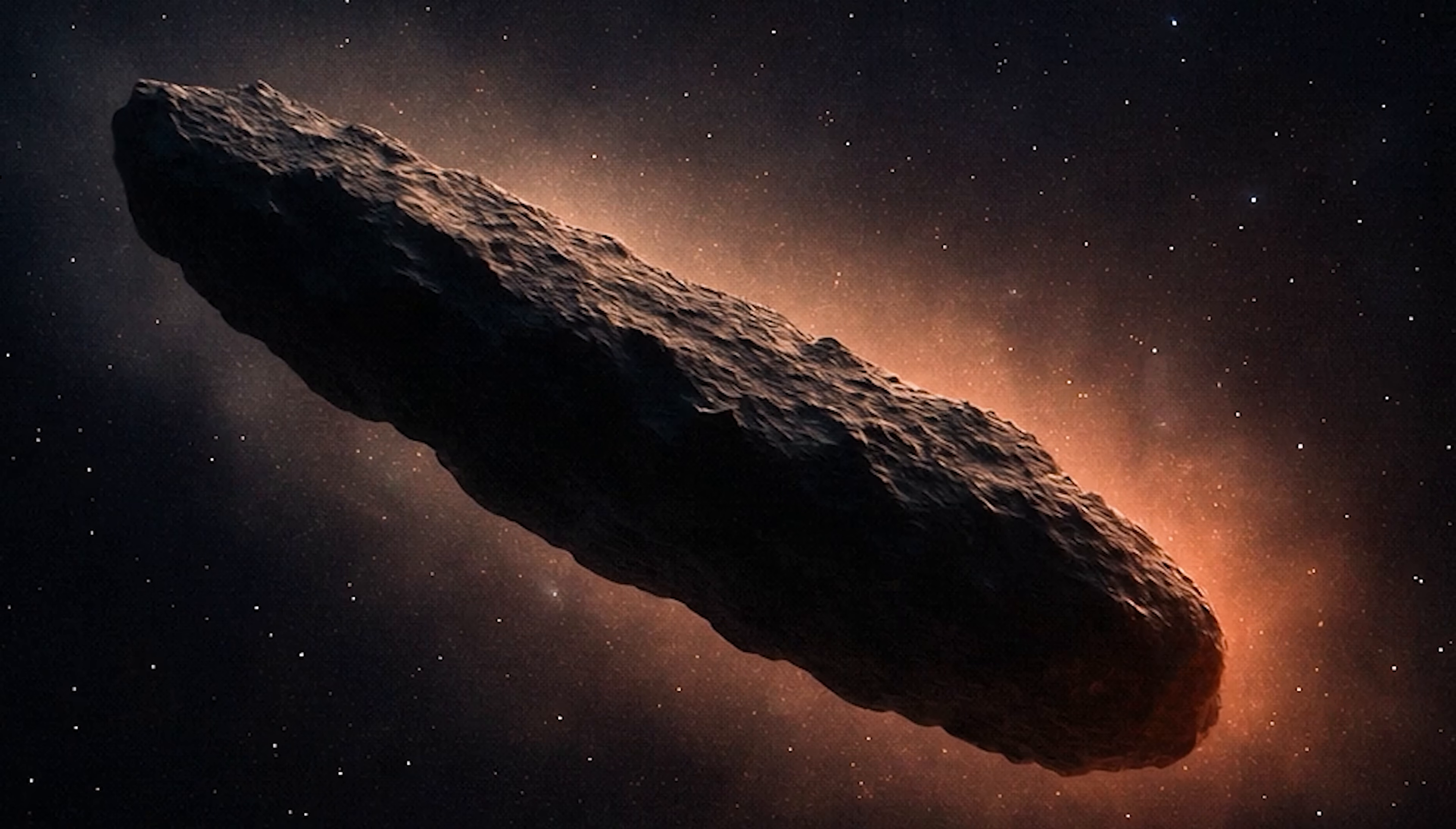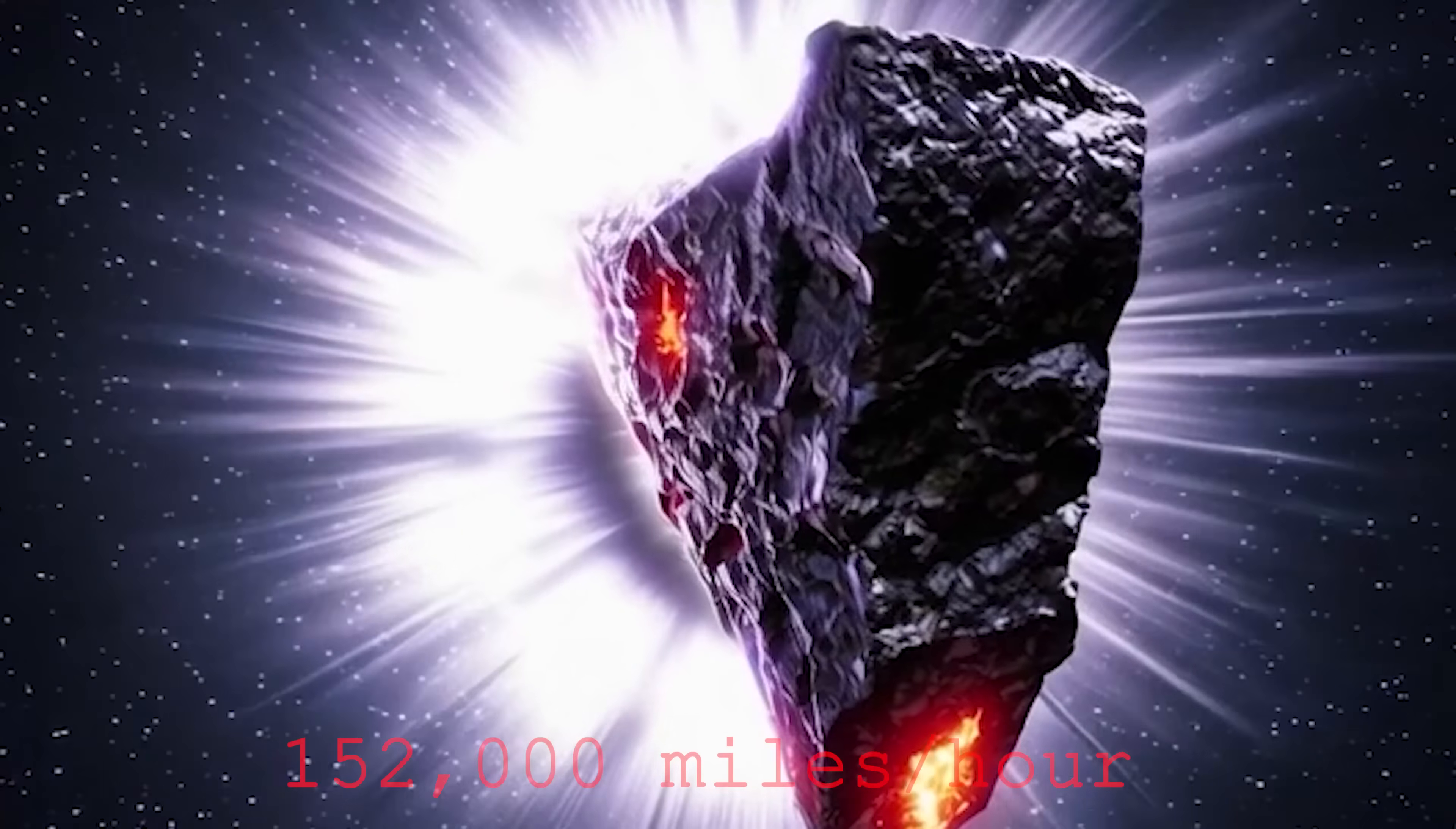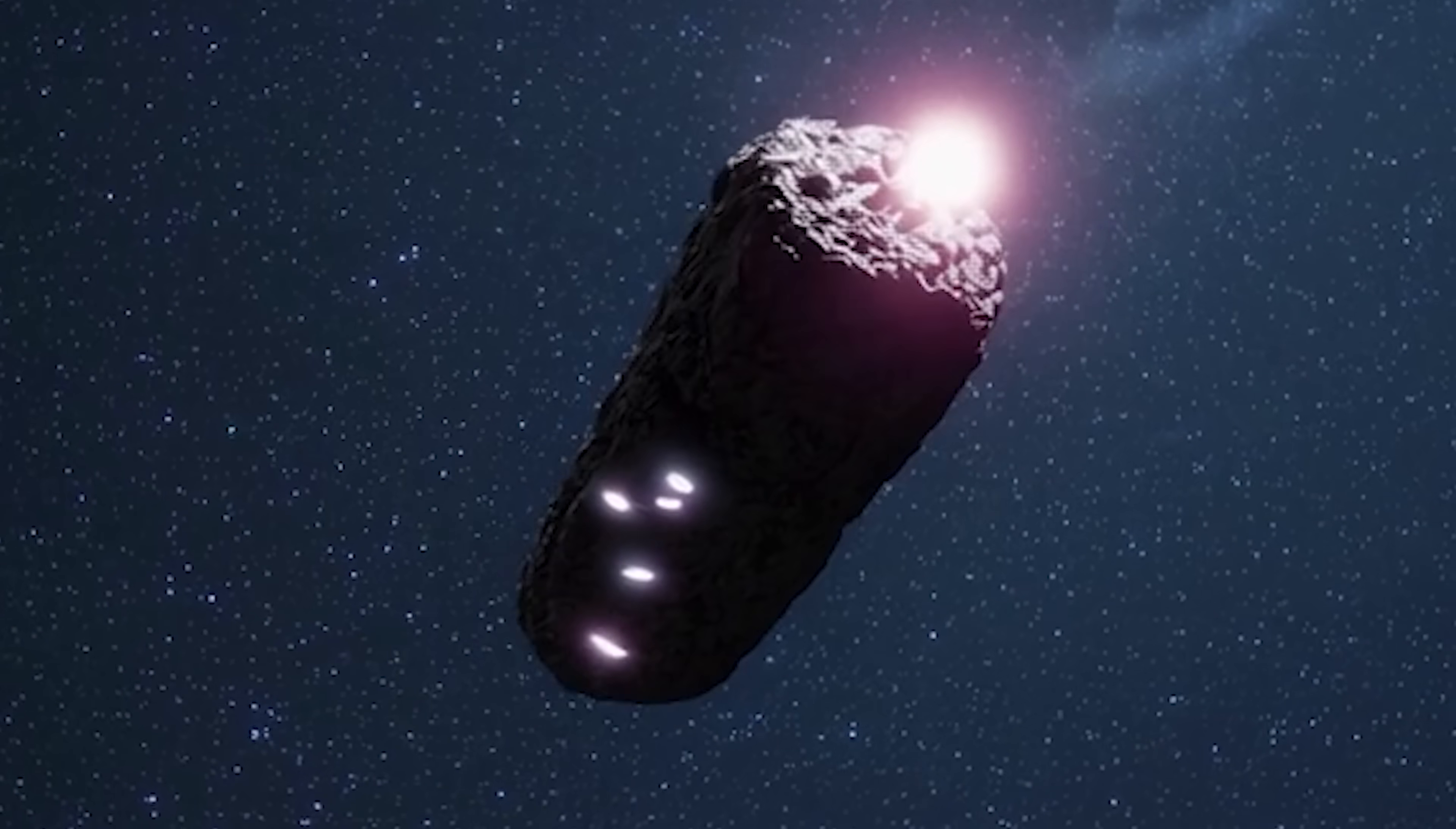Now, have you ever wondered? Where exactly is 3I Atlas right now in the vastness of space? In reality, this mysterious interstellar object is racing through our solar system at an unbelievable speed, roughly 152,000 miles per hour. At such velocity, it is moving tens of times faster than the fastest aircraft humanity has ever built. Currently, 3I Atlas is located at a distance about 3.8 times farther from the Sun than Earth, which means it still resides in the outer region, where sunlight and solar heat have already grown faint.